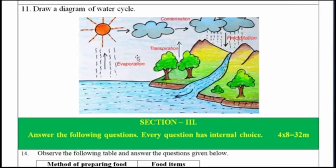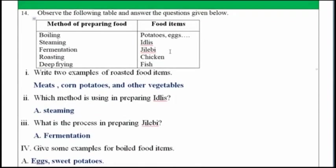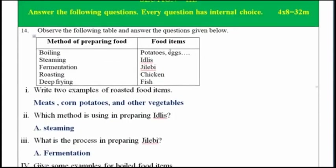Draw a neat diagram of the water cycle. This is the water cycle, students. Section 3 has four questions with choice. Each question carries 8 marks, for a total of 32 marks in this section.